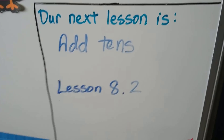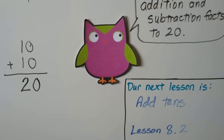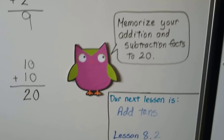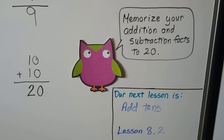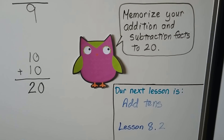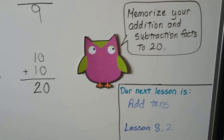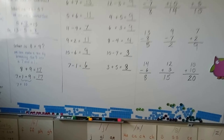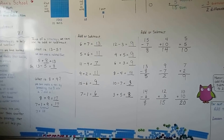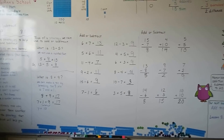Our next lesson is add 10s — that's lesson 8.2. Remember, you can make your own flashcards or buy some and practice your addition and subtraction facts. It'll really help you and you'll get very fast at math if you have them memorized. I hope you're doing well — keep trying. I think you're doing a good job and I'll see you next time. Bye!